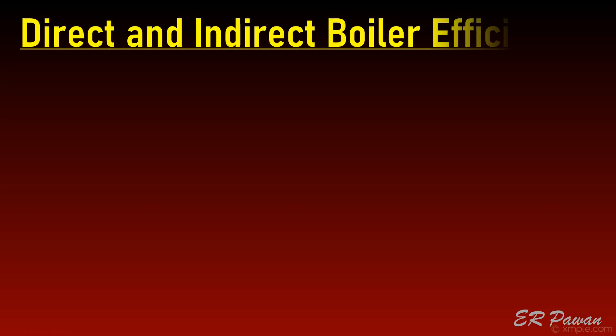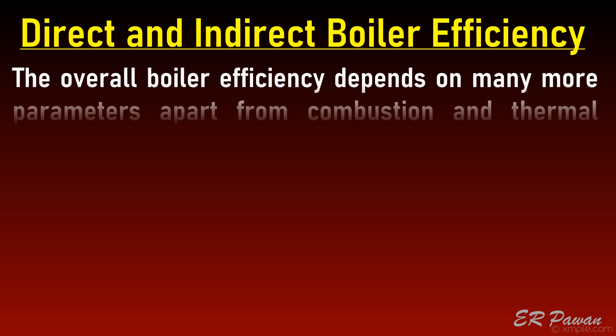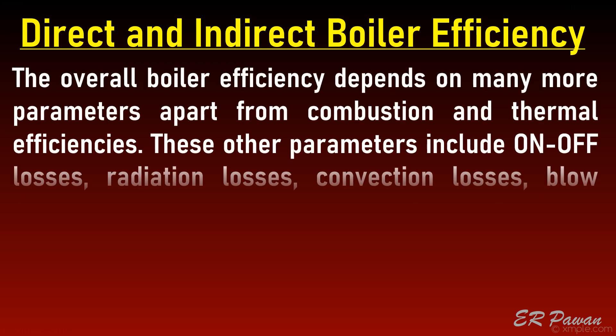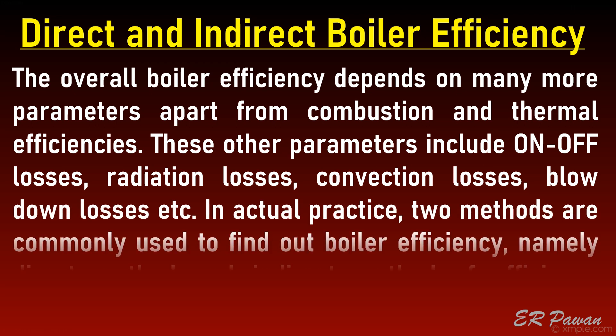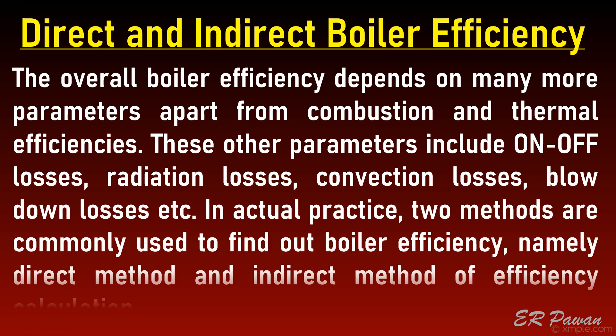Direct and indirect boiler efficiency: The overall boiler efficiency depends on many more parameters apart from combustion and thermal efficiencies. These other parameters include on-off losses, radiation losses, convection losses, blowdown losses, etc. In actual practice, two methods are commonly used to find out boiler efficiency, namely the direct method and the indirect method of efficiency calculation.